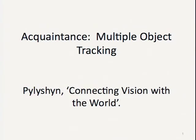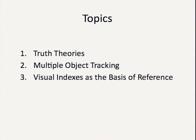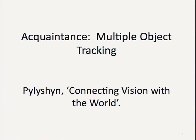Hello, good afternoon. In the last few weeks of the class, we'll be going back to Russell's notion of acquaintance in one way or another. I want to begin today by looking back at where we've got to with the notion of truth and then a countermeaning, and then look at the main topic today and next time: multiple object tracking and experiments that Pylyshyn has done on multiple object tracking, and say why they might be relevant to anything we are doing.